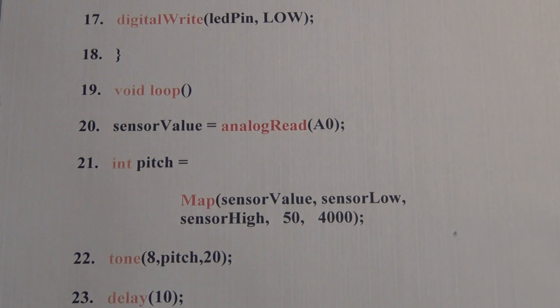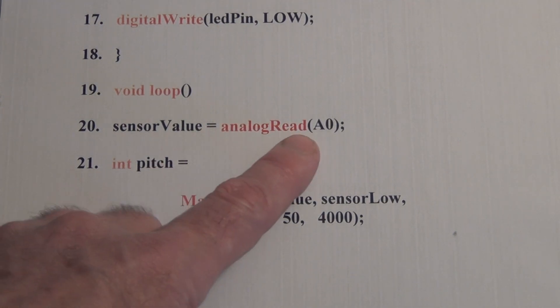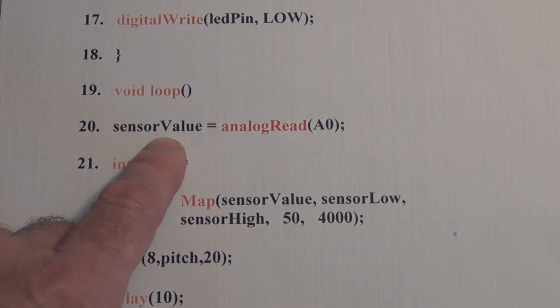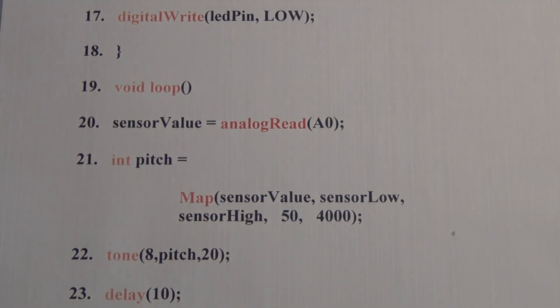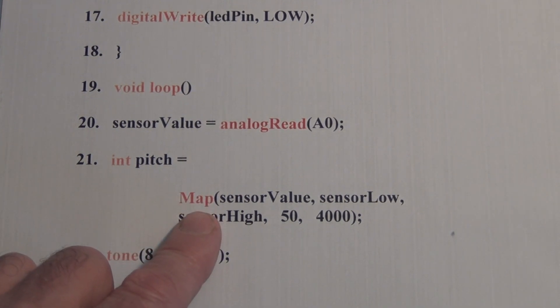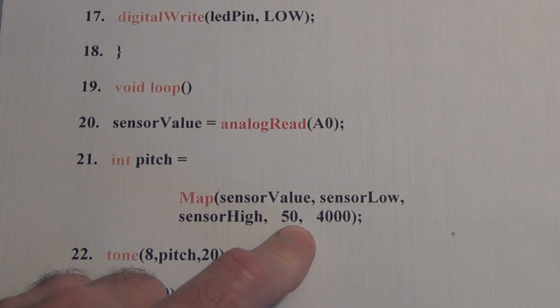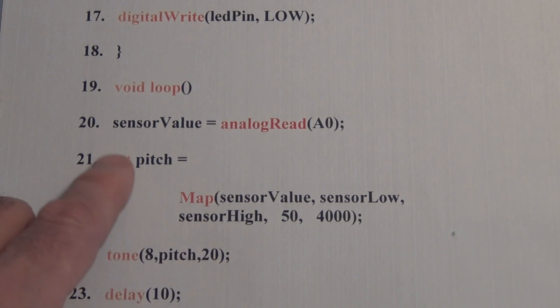Once the calibration is completed we do an analog read at A0 and read the current sensor value. Next we use a new function called map which remaps a number from one range of values to another. So in this case we're taking the range of values from low level light to the brightest light in a room and we're going to change that to a range of frequency values from 50 to 4000 and then assign that to the integer variable pitch.